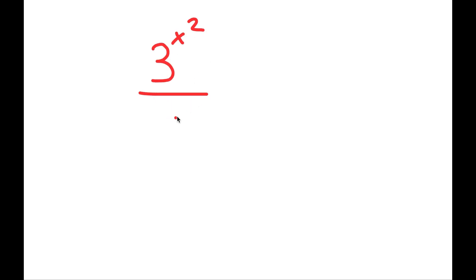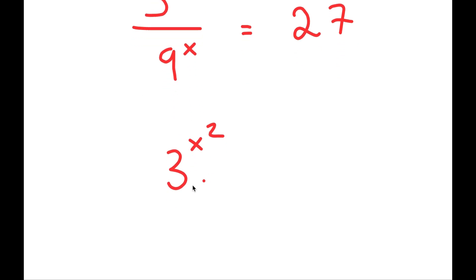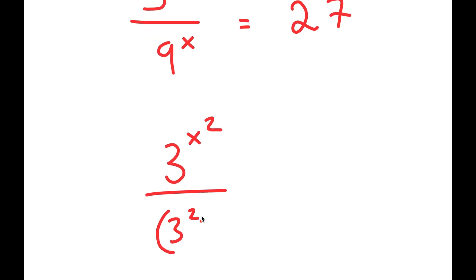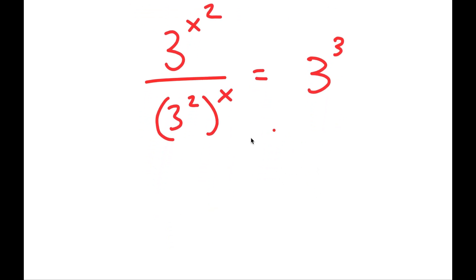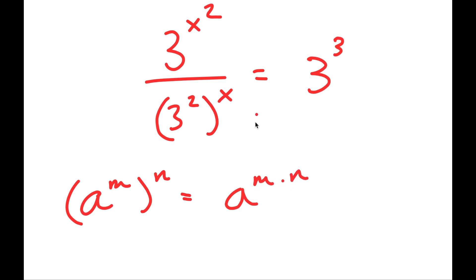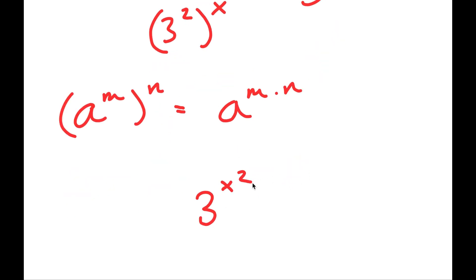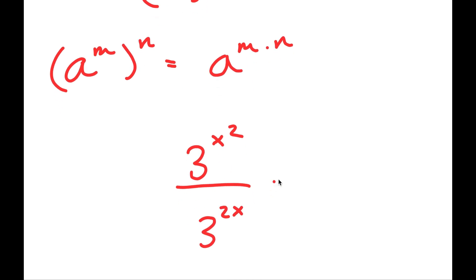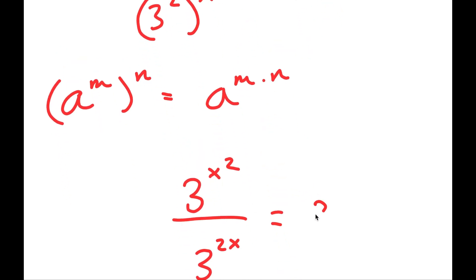In this video, I'm going to solve the equation 3 to the power of x squared over 9 to the power of x equals 27. To solve this, I'll first rewrite 9 as 3 squared and 27 as 3 to the power of 3. Using the property a to the power of m to the power of n equals a to the power of m times n, I get 3 to the power of x squared over 3 to the power of 2x equals 3 to the power of 3.